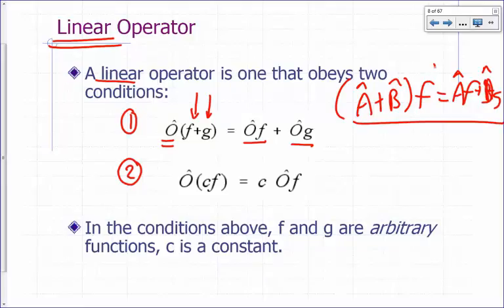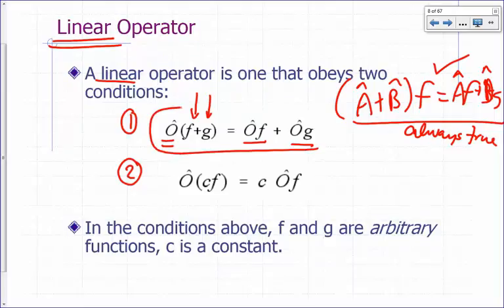This is the sum of two operators — this is always true by definition. A sum of two operators will always give you the sum of the results. But condition one is not always true.